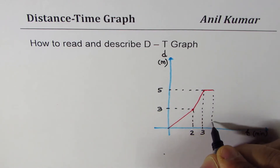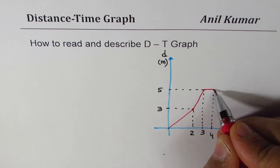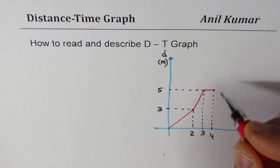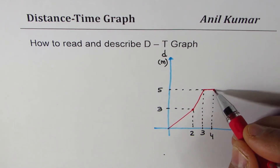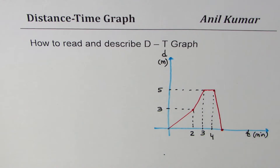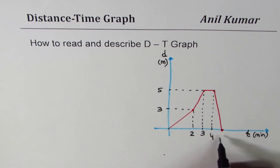Then Peter stops for one minute. When the person stops, the distance does not change — it stays the same on the graph. Then the person decides to return, running back the whole distance at a very high speed, covering the entire distance in the next minute.